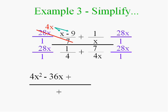And I'll get 4X squared minus 36X. And here the X will cancel. And I'll get a 28 times 1, or 28.